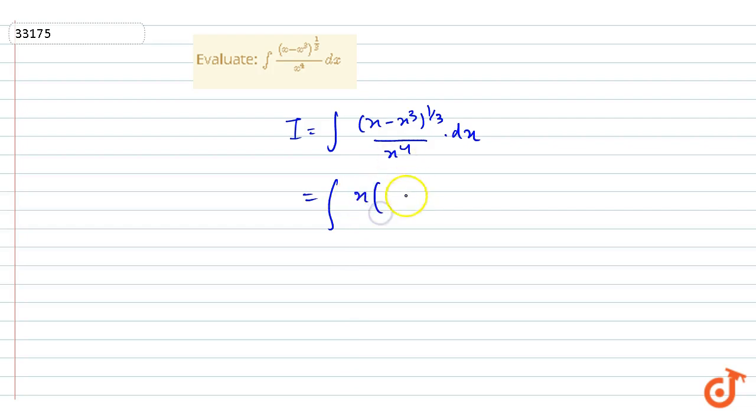x³ cancels and we will get it as integration of (1/x² - 1)^(1/3) / x³ dx.